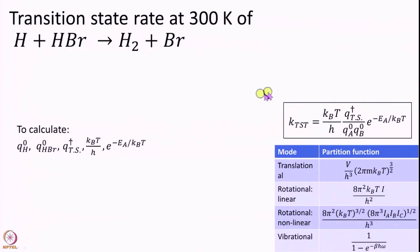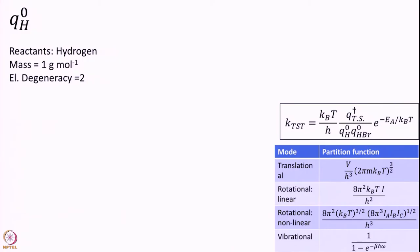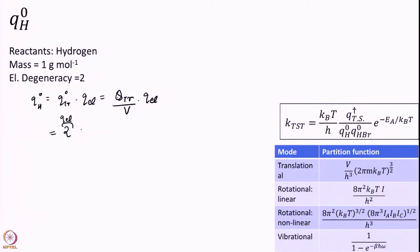This is the formula we need. I have all the formulas and will calculate all the components: KT/h, the three partition functions, and the exponential. Let us start with Q_H°. The required data is simply the electronic degeneracy and the mass. Q_H° = Q_translational° × Q_electronic, which is Q_translation / volume × Q_electronic. Q_electronic is the degeneracy, which is 2. So this is 2 × (Q_translation / volume), and the volume will cancel, leaving 1/h³.